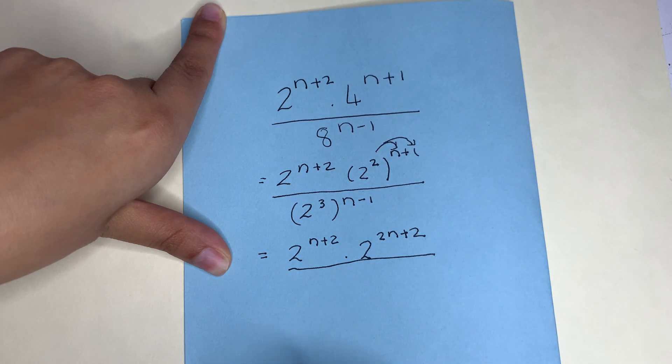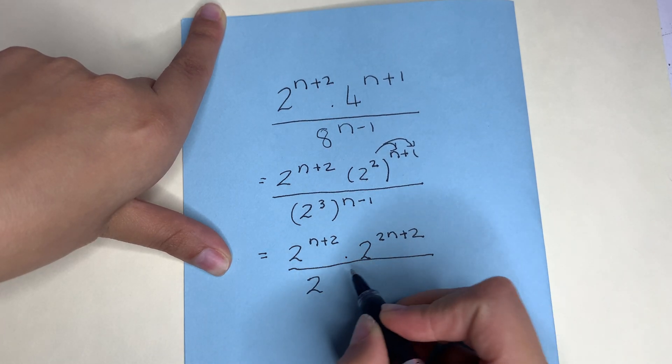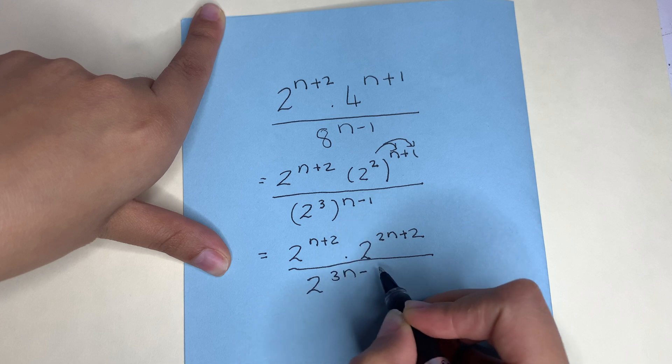In a similar way, we're going to do the one in the denominator. This is going to be 2 to the power of 3n minus 3.